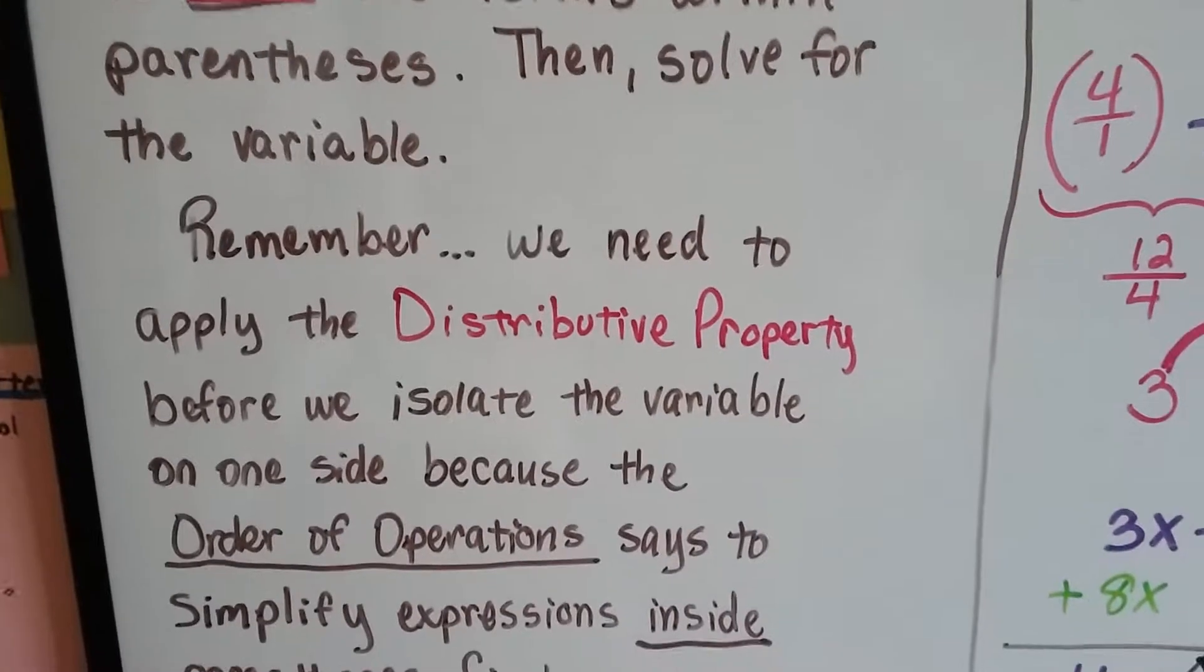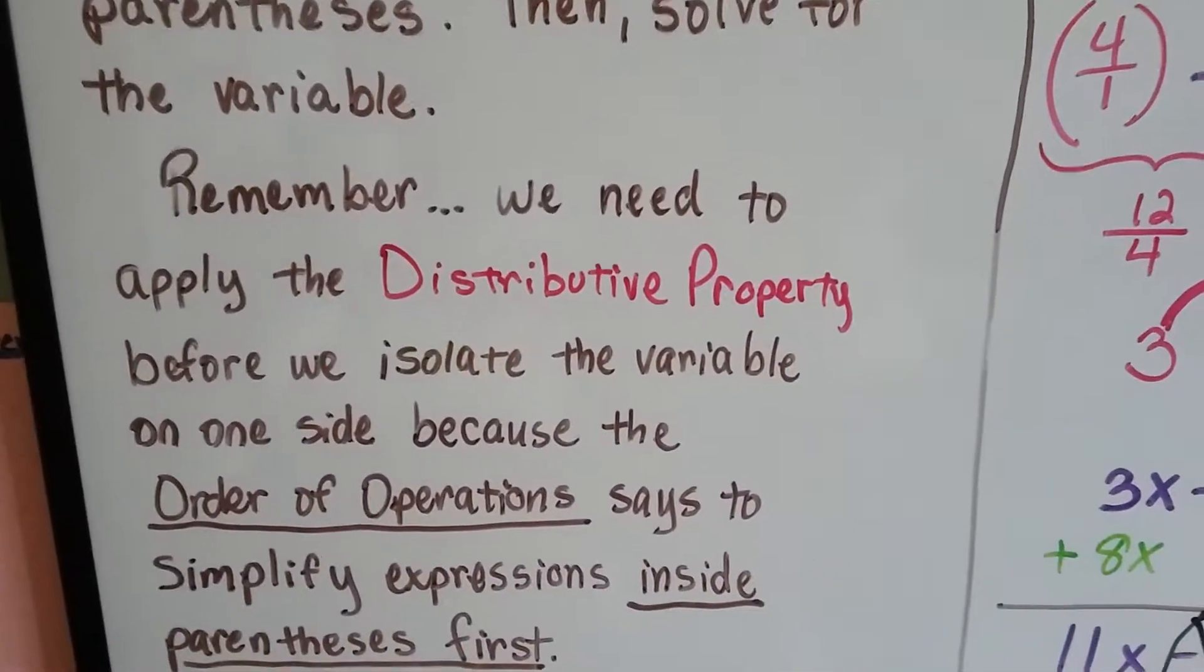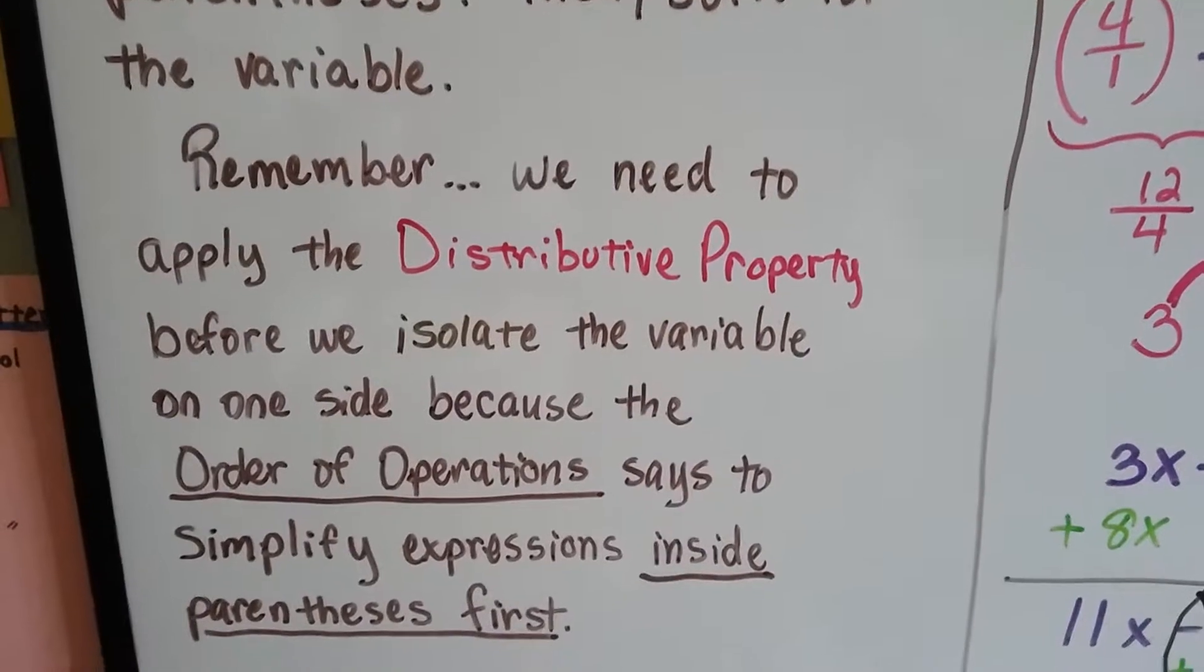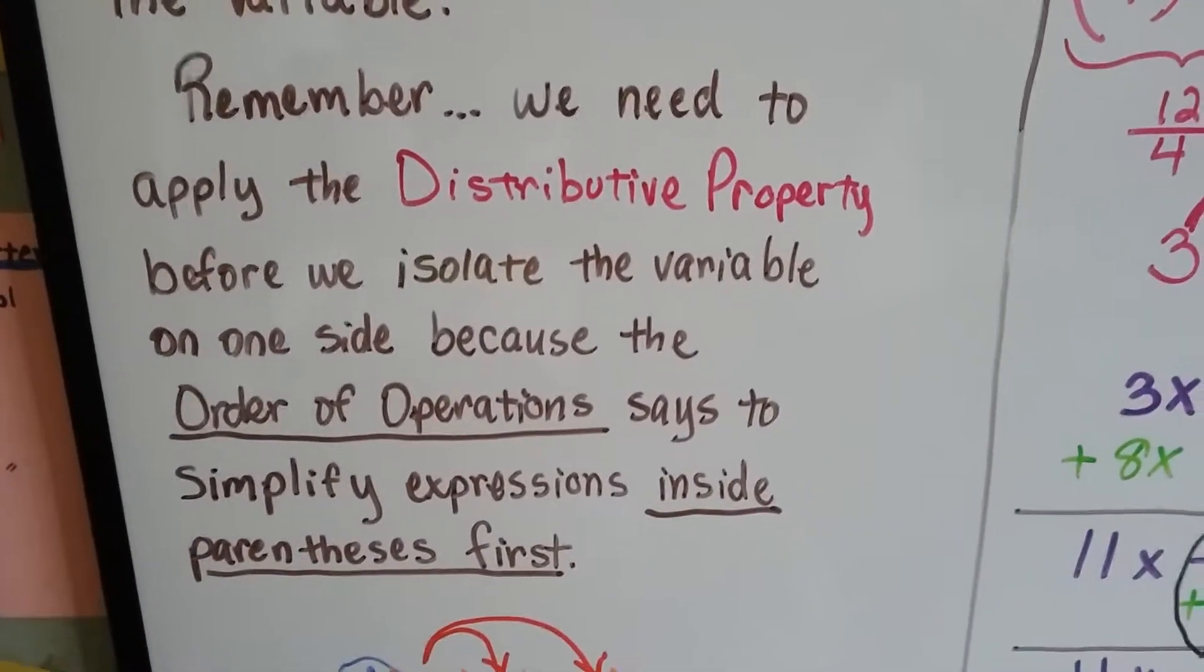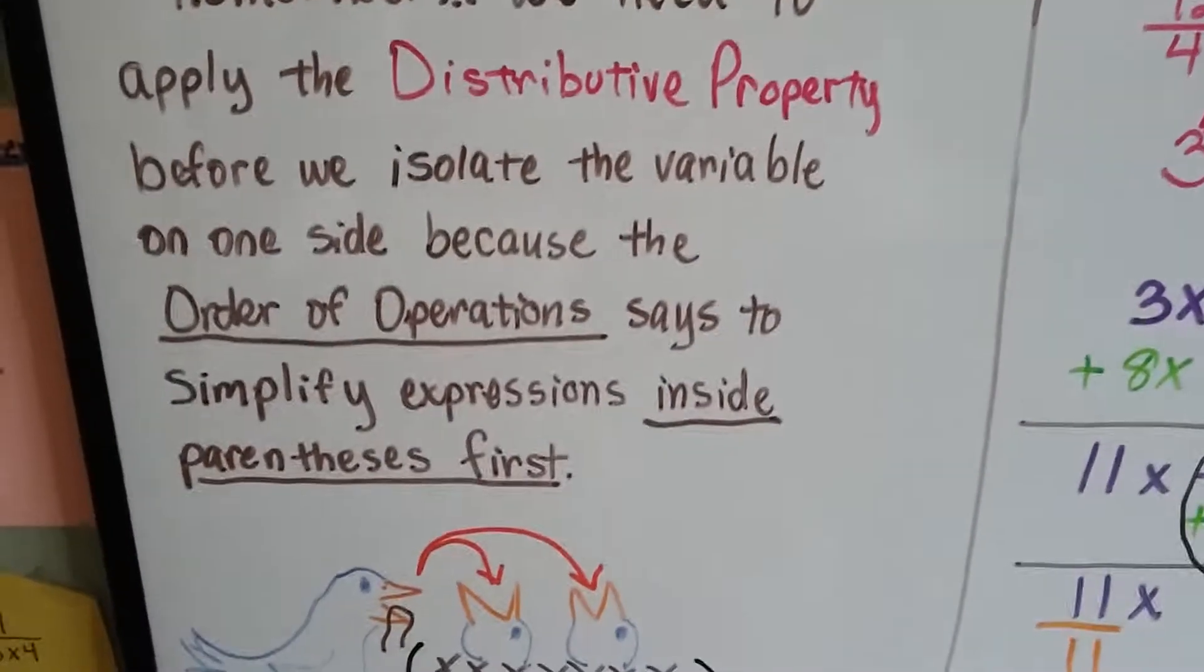Now remember, we need to apply the distributive property before we isolate the variable on one side, because the order of operations says to simplify expressions inside parentheses first.